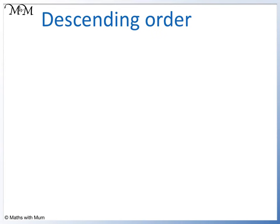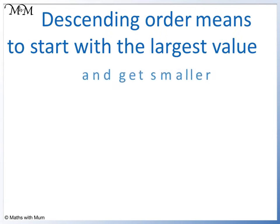Descending order means to start with the largest value and get smaller. It is the opposite of ascending order.